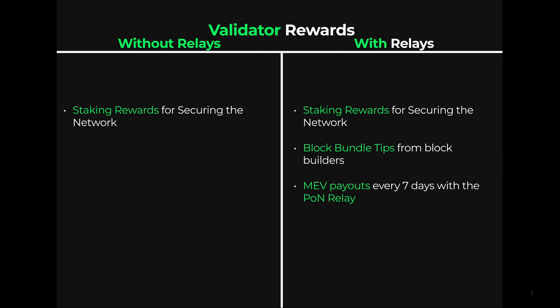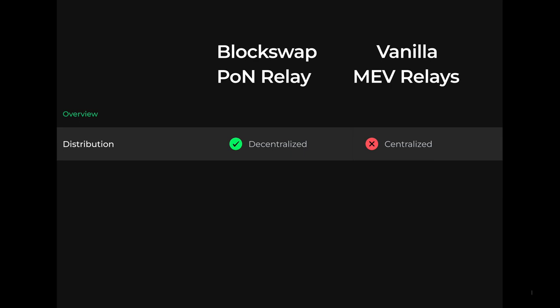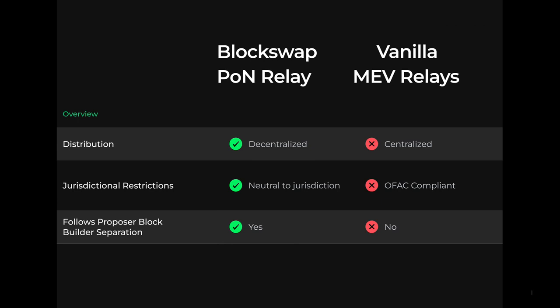The Proof of Neutrality relay, also known as the PON relay, is a decentralized protocol built as a solution to the issue with centralized relays. Per its name, it is neutral to jurisdictional restrictions. The PON relay was built to follow proposer-builder separation, which is a mechanism that Vitalik Buterin theorized as a solution to the threats of MEV and centralized relays. Unlike other relays, the PON relay gives consistent MEV payouts to solo staking validators. Usually it costs 32 ETH to be a validator, but it's possible to do this with just 4 ETH — see the links below.